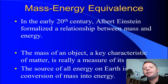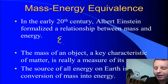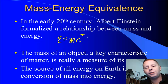And in the early 20th century, Albert Einstein formalized a relationship between mass and energy. And you've probably seen this formula. A simplified version of it says that energy, E, equals m, mass, times the speed of light squared. What he's really doing is he's saying that the mass of an object, which is a characteristic of all matter, is really a measure of how much energy it contains.